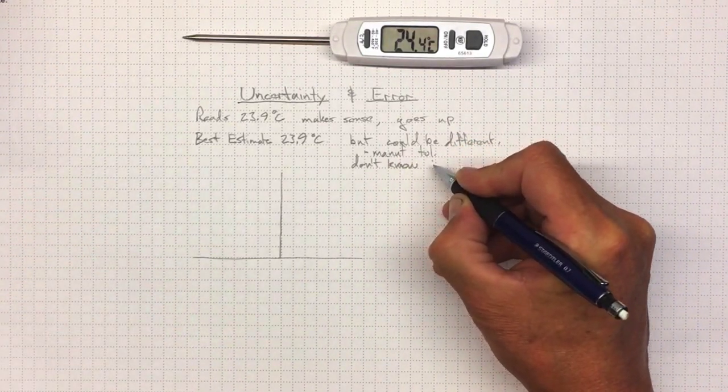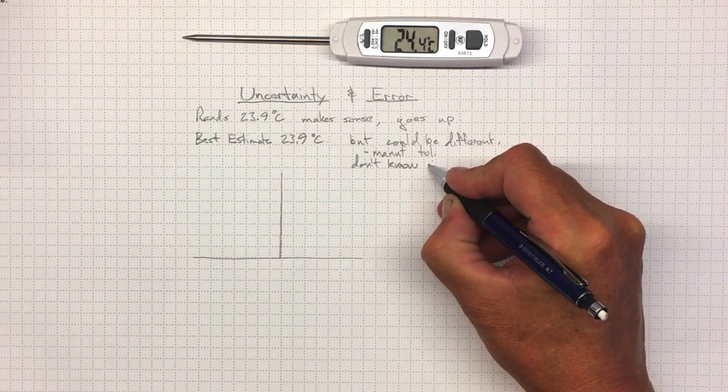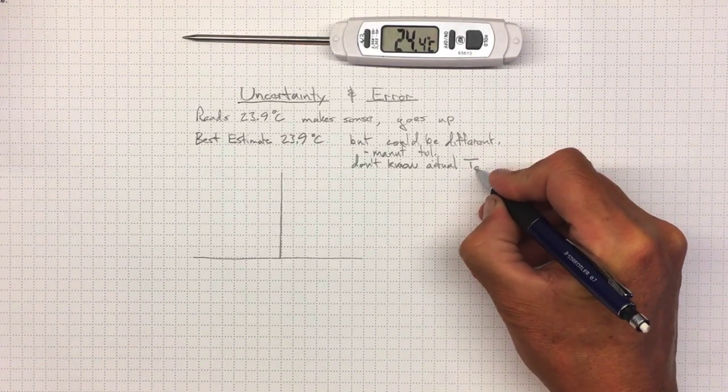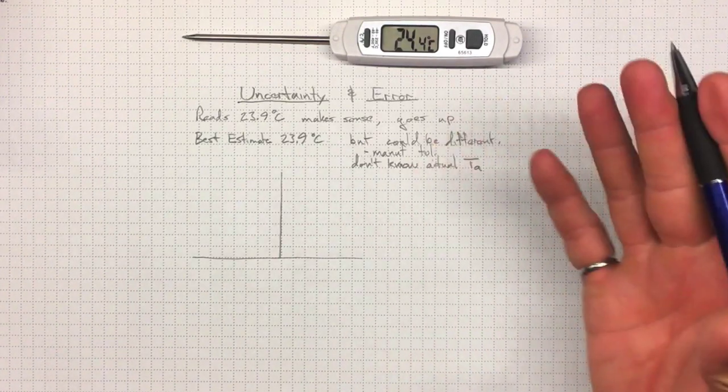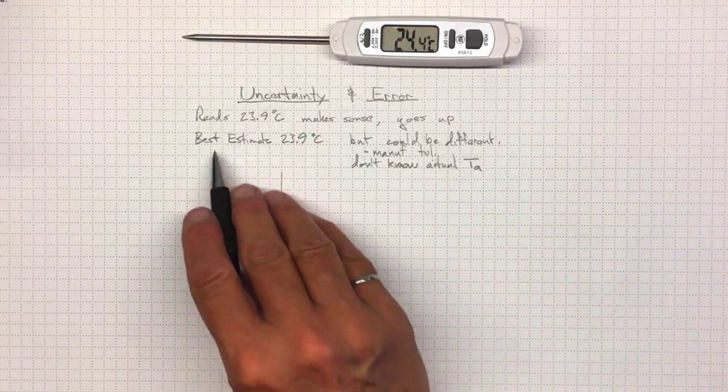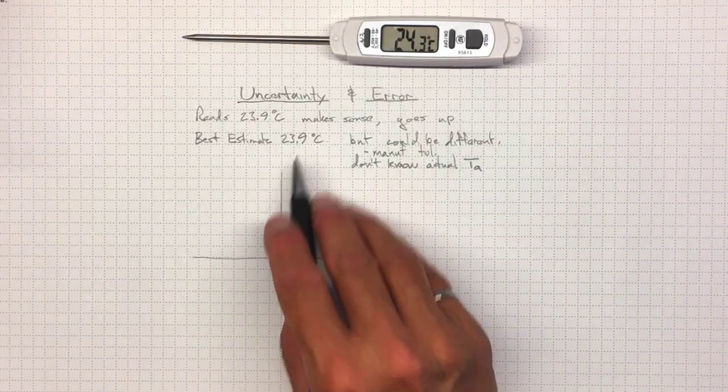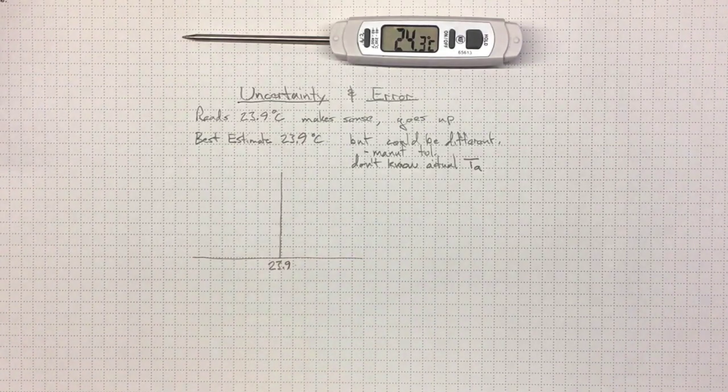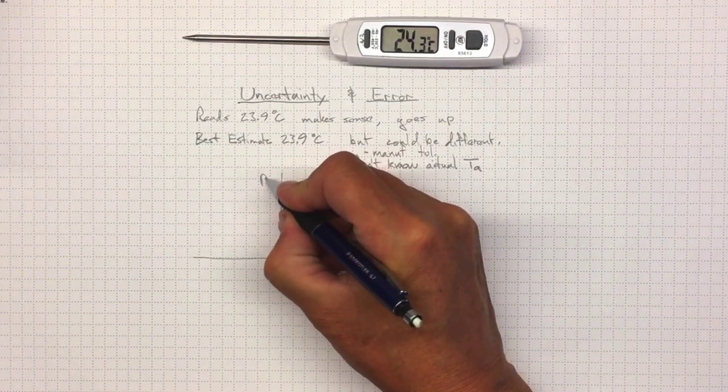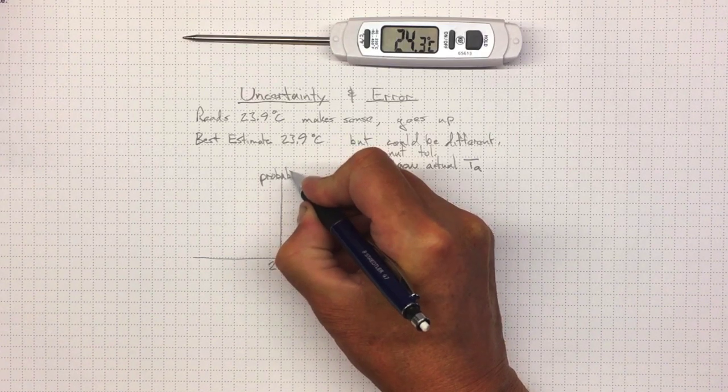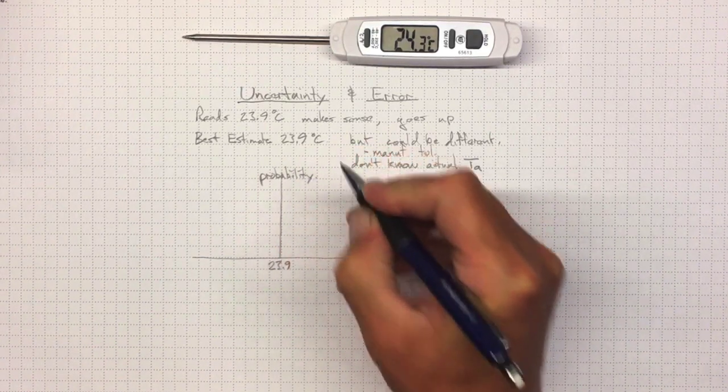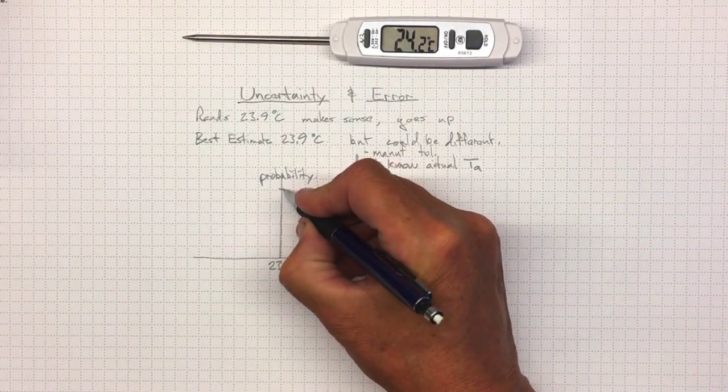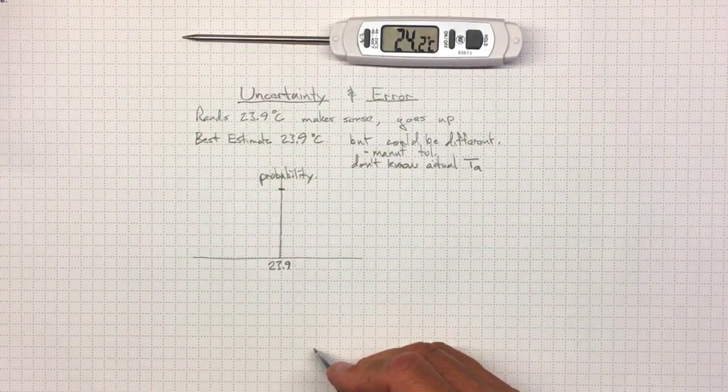And that's important to remember is that in most measurement situations, we don't know what the actual temperature T sub A is or whatever other variable we're trying to measure. So all we can do is make our best estimate. And right now our best estimate is 23.9 degrees. And there's a pretty high probability that that actual temperature is really close to 23.9.